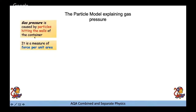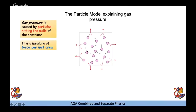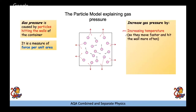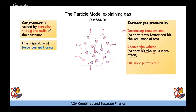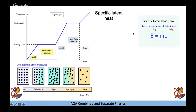Gas pressure is caused by particles hitting the walls of the container, and it's a measure of the force per unit area. To increase gas pressure you can: increase temperature (so particles move faster and hit the wall more often), reduce the volume (so particles hit the walls more often per unit area with the same number of particles), or add more particles (so there are more hitting the wall).